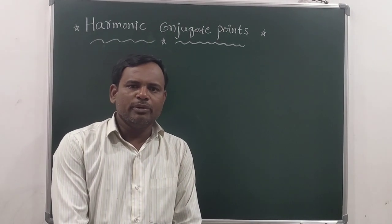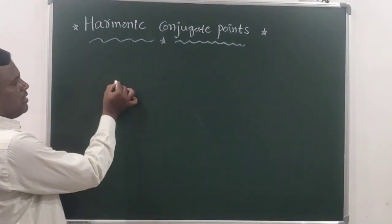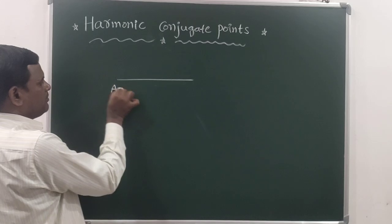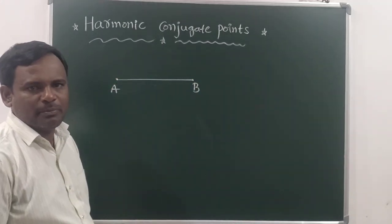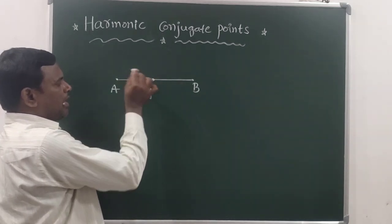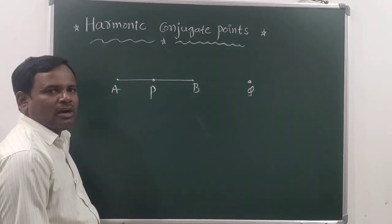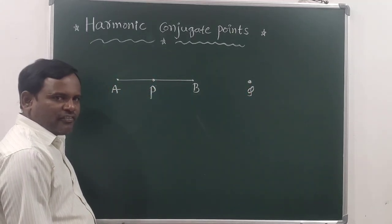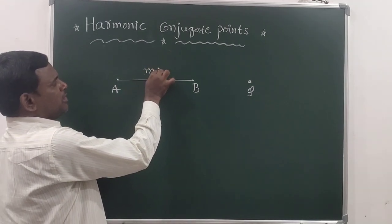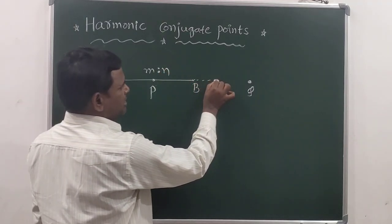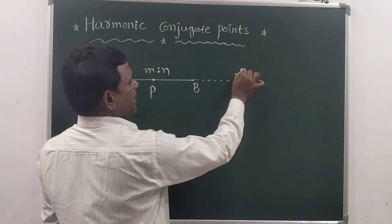In this video, I am going to explain harmonic conjugate points. Consider a line segment AB. With respect to this line segment AB, P and Q are said to be harmonic conjugate points if and only if P divides AB in the ratio M to N and Q divides AB in the ratio minus M to N.